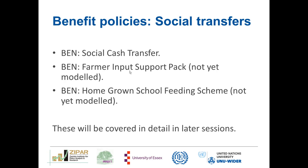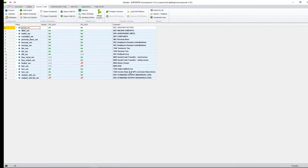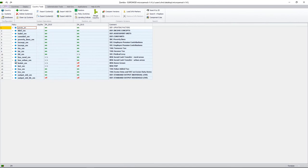Our next definitional policy is our benefit policies — in this case our social transfers. In MicroZAMOD version 1.4 we currently only have one benefit policy, which is the social cash transfer. We also have the farmer input support pack and the homegrown school feeding scheme, however these have not yet been modeled in this version. Looking at the benefit policy on the model, we have two benefit policies: the social cash transfer for rural areas and the social cash transfer for urban areas. The homegrown policy and farmer input support pack program have been turned off as they have not been modeled.